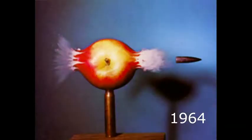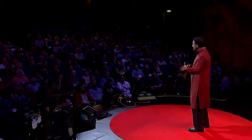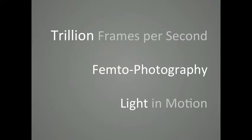Doc Edgerton inspired us with awe and curiosity with this photo of a bullet piercing through an apple, an exposure just a millionth of a second. But now, 50 years later, we can go a million times faster and see the world not at a million or a billion, but one trillion frames per second. I present you a new type of photography, femto photography, a new imaging technique so fast that you can create slow motion videos of light in motion.